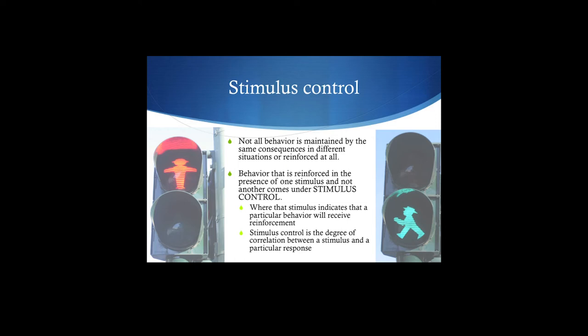In the presence of the green light, you get reinforced for walking across the street and not for just waiting. The discriminative stimulus signals that reinforcers are available. What happens in one context is not a guarantee it will happen in another. From a mathematical perspective, stimulus control is simply the degree of correlation between a particular response and a particular stimulus — an SD signals that a particular behavior is a good thing to do right now.